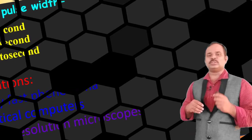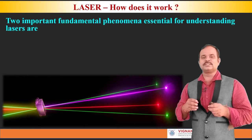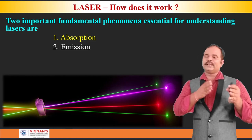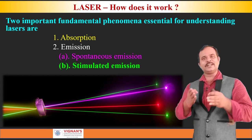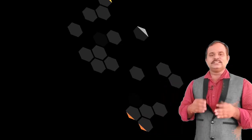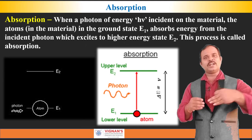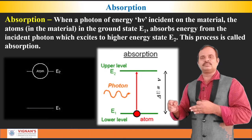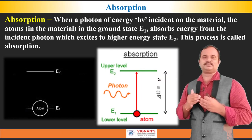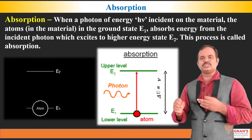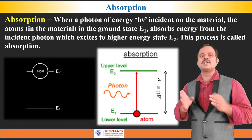Now, the question is from where these special characteristics are appearing in the laser. There are two important principles behind this: one is absorption of photons and emission of photons. In the emission of photons, we have spontaneous emission and stimulated emission. In general, in any material, initially all the atoms are in the ground state. When a photon of energy is incident on a material, the atoms in the ground state absorb the energy from the photon and go to a higher energy state. This whole process is called absorption of photons.